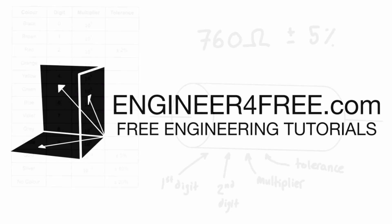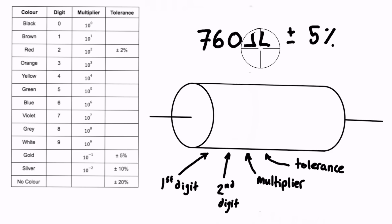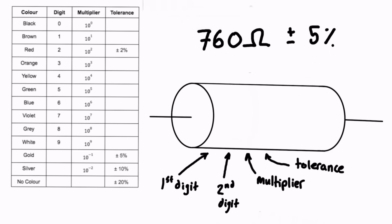Hey, what's up guys, welcome back. In this video we want to determine resistor color code when we're given the actual resistance and tolerance values — kind of going backwards from the previous videos. For example, you're given a resistance value of 760 ohms plus or minus 5% and you want to identify what are all the colors of the bands and in which order, which might involve drawing them on a resistor or just writing out what the first, second, third, and fourth band are.